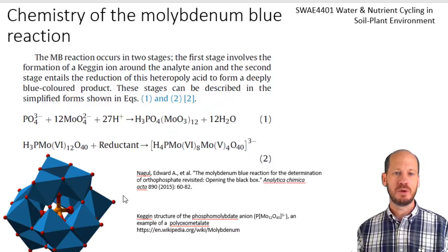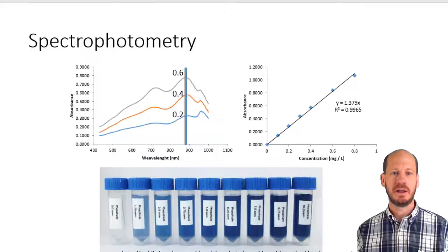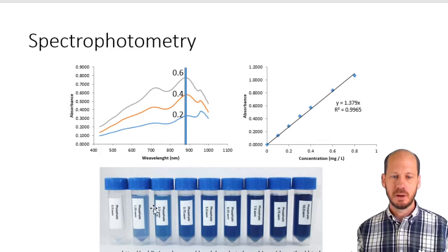If you see the tubes on the bottom, the first tube with no color is only water plus the color development solution. If you increase the concentration of phosphorus in these solutions, the color development will become a stronger blue color. We can measure the amount of blue color using a spectrophotometer.